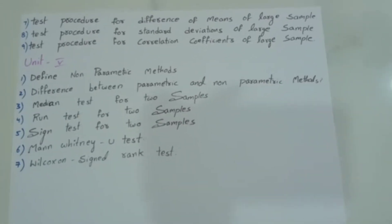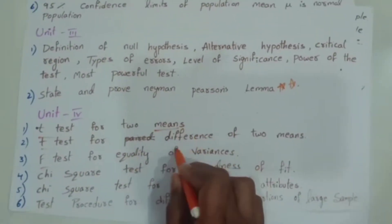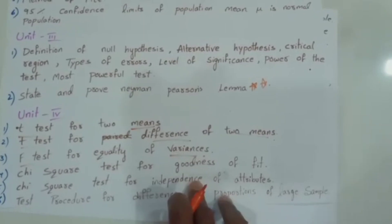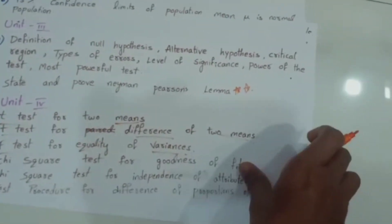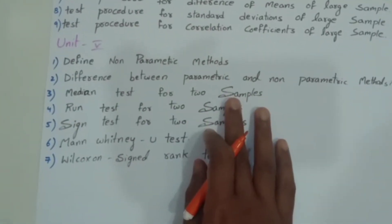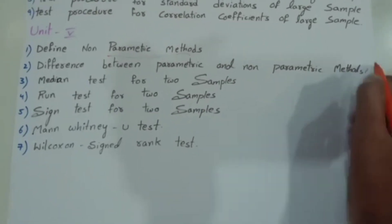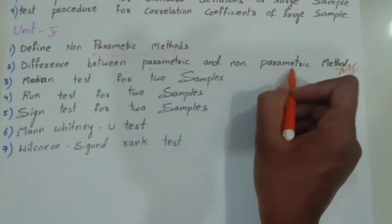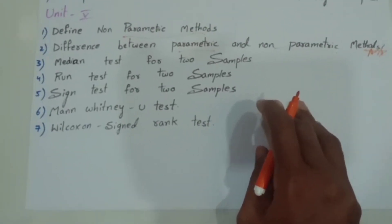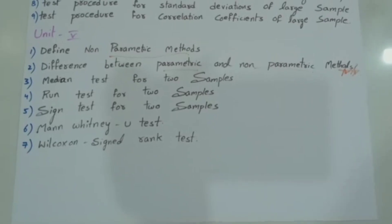In Unit 4, you should get a good idea of the procedure for: T-test, test for difference of two means, F-test for variance, chi-square goodness of fit, and procedure for difference of two means. In Unit 5, there are seven questions. Define nonparametric methods, difference between parametric and nonparametric methods, median test for two samples, run test for two samples, sign test for two samples, Mann-Whitney U test, and Wilcoxon signed-rank test.